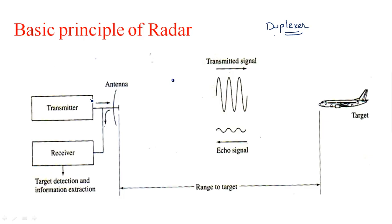During transmitting time, the antenna transmits the signal. When an object is present, the signal is reflected back and collected by the same antenna, which then sends it to the receiver. A duplexer must be placed at this location, and its main purpose is to separate the transmitting signal from the receiving signal.